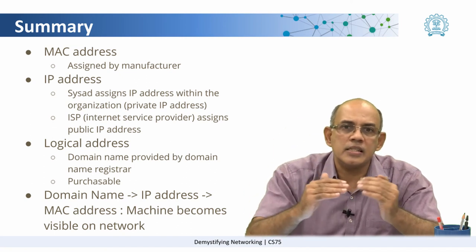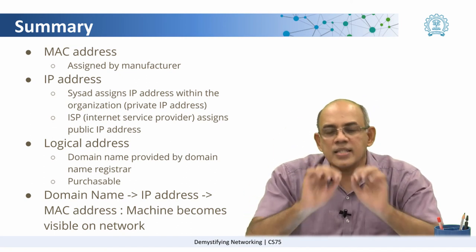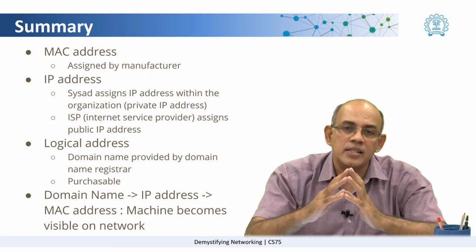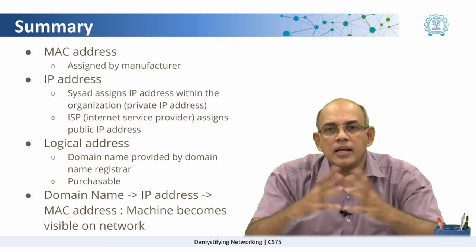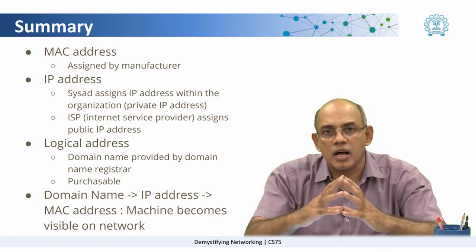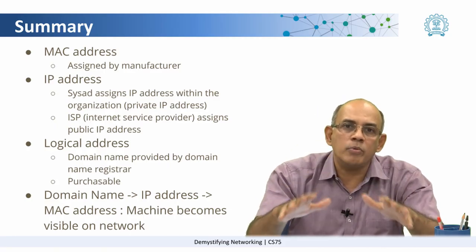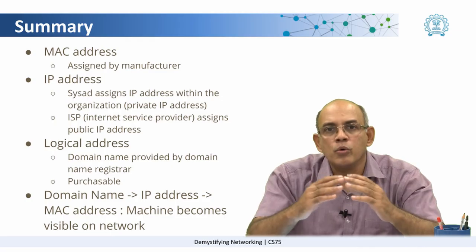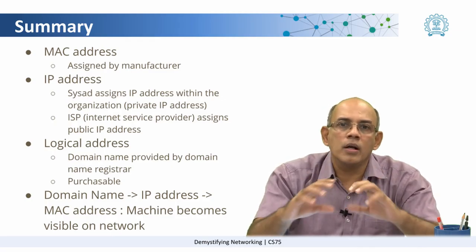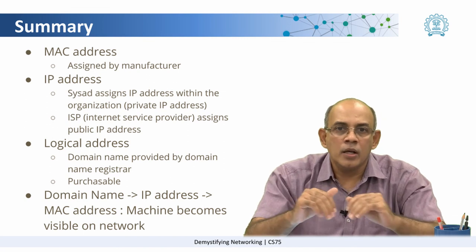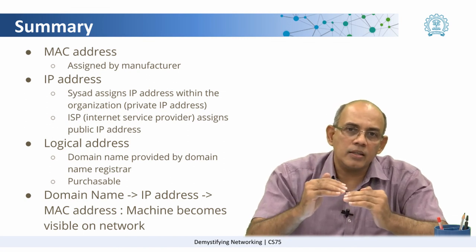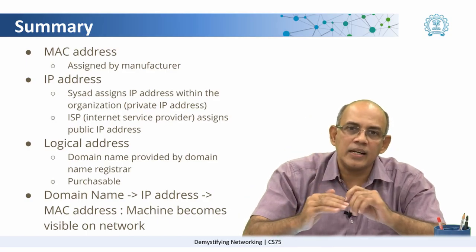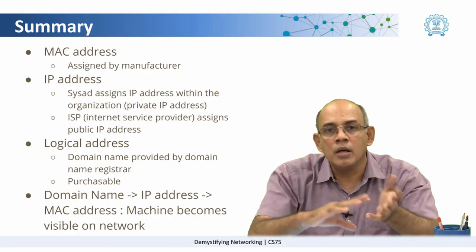These authorities often work with the ISP to assign the public IP address for an organization. On top of that is the logical address, which is your domain name, provided by the domain name registrar — which, through a network or series of domain name registries, allows you to purchase or procure different domain names of your choice. In summary, the domain name is associated with the IP address, which is then associated with your MAC address, and that is when your machine becomes visible on the network.